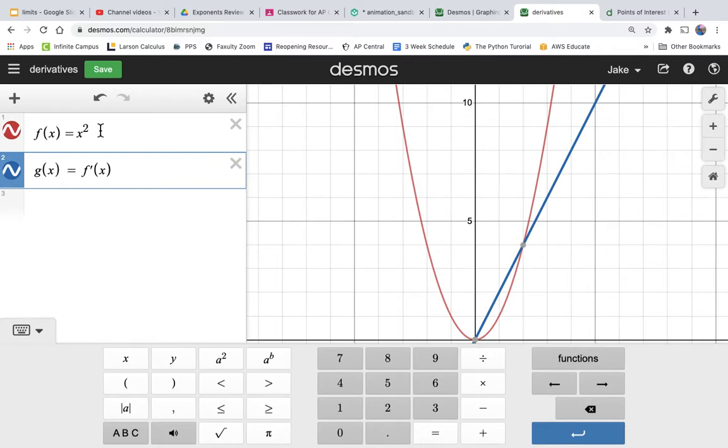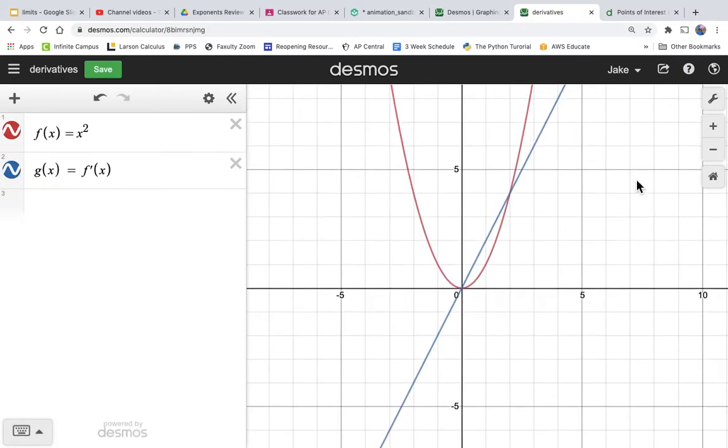We know from the power rule that that is 2x, and so this line really is just 2x, and this is our x squared. So let's just think about does this make sense.